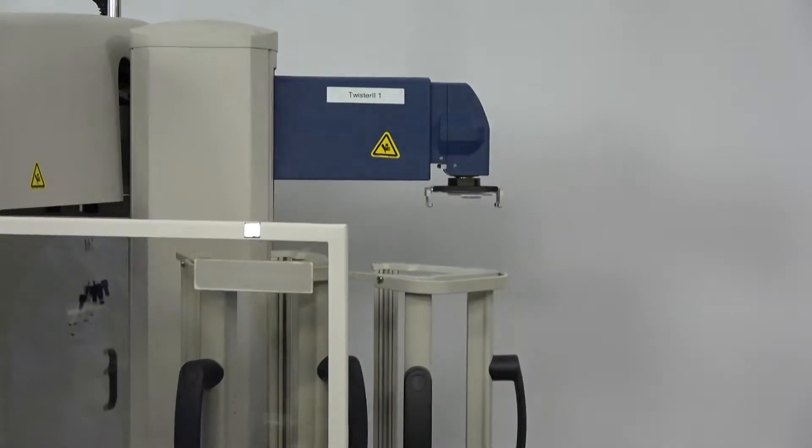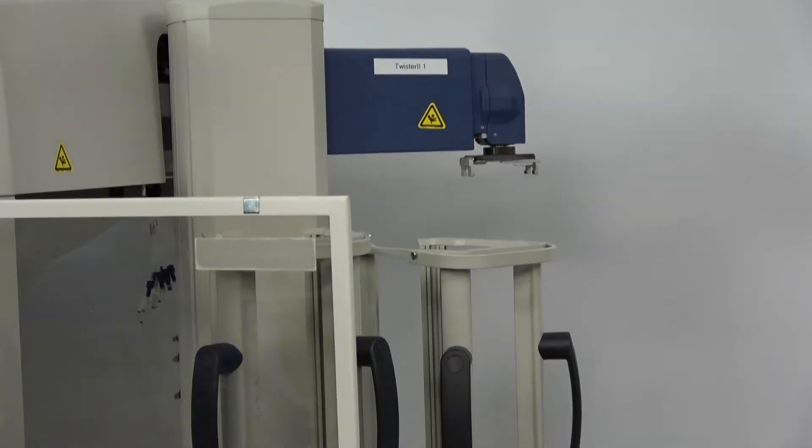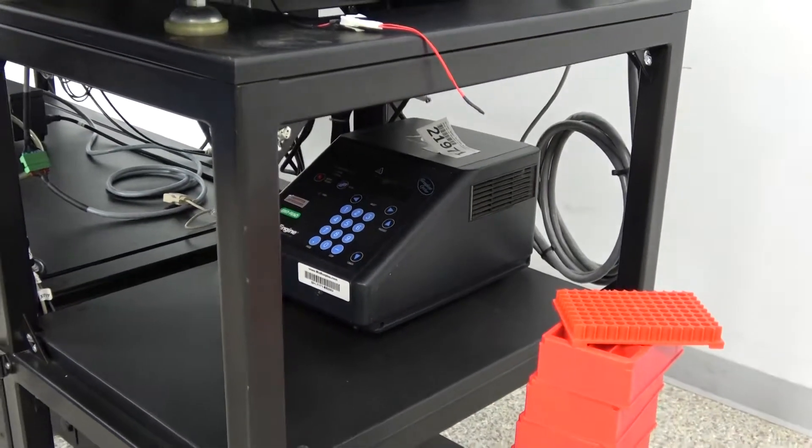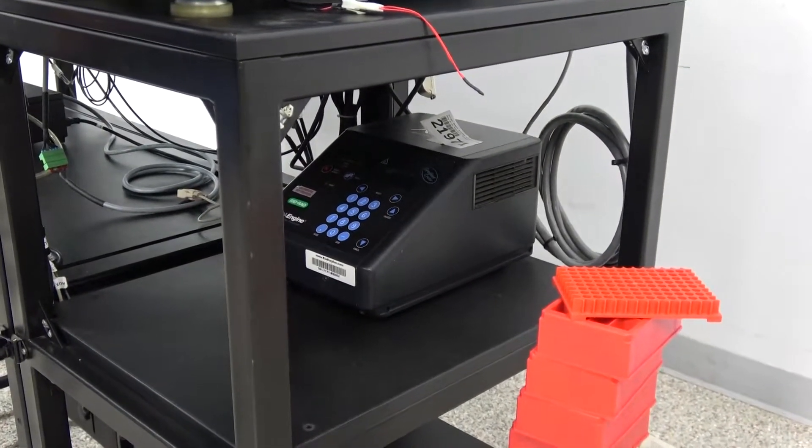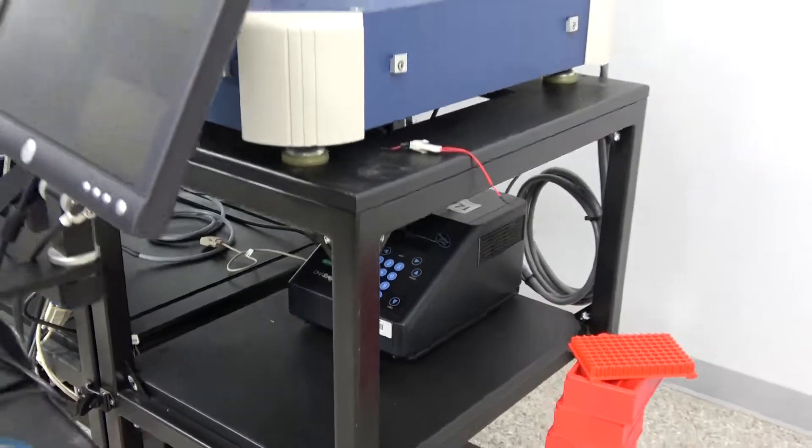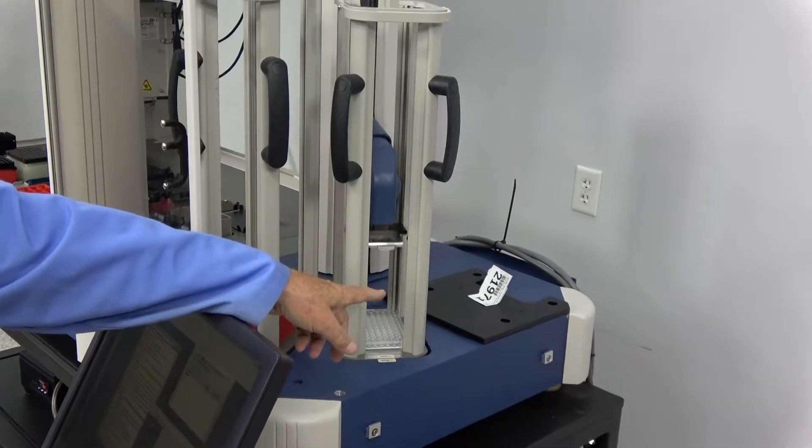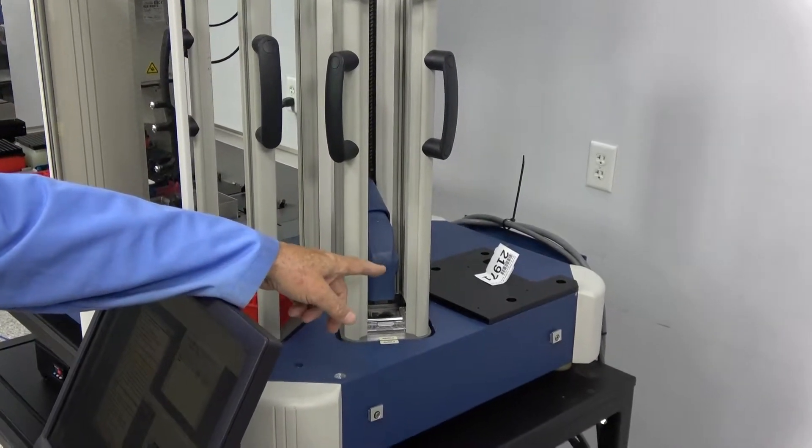Also included to make it a gene array station is a DNA engine. This has the base station. It is missing the remote head, the thermal cycler head, which would go there.